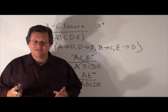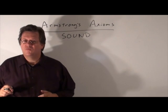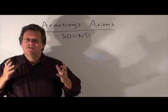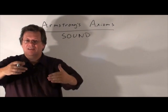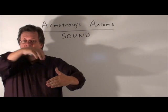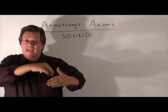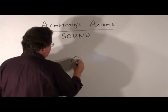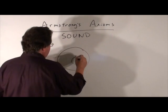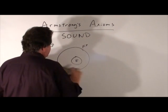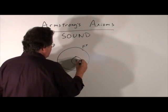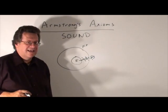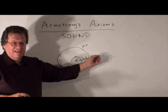As you recall, we recently mentioned that Armstrong's axioms are sound. What that means is if we find any functional dependencies by applying Armstrong's axioms, they will be inside of F closure. So, here's F, here's F closure, the set there. We want to say that Armstrong's axioms, by saying it's sound, would not go outside of the F closure.